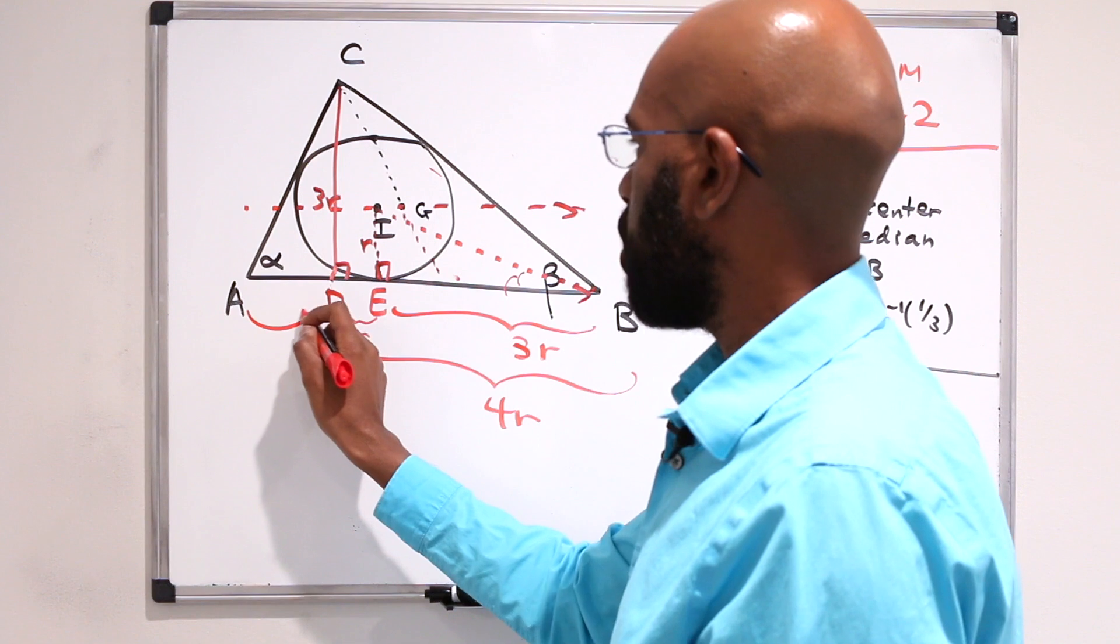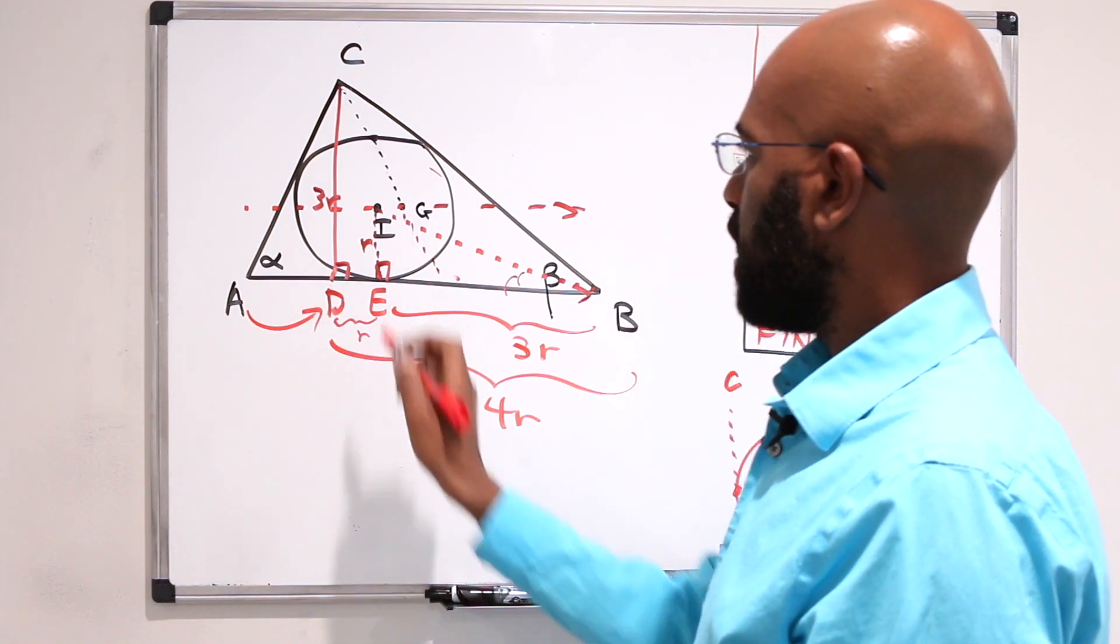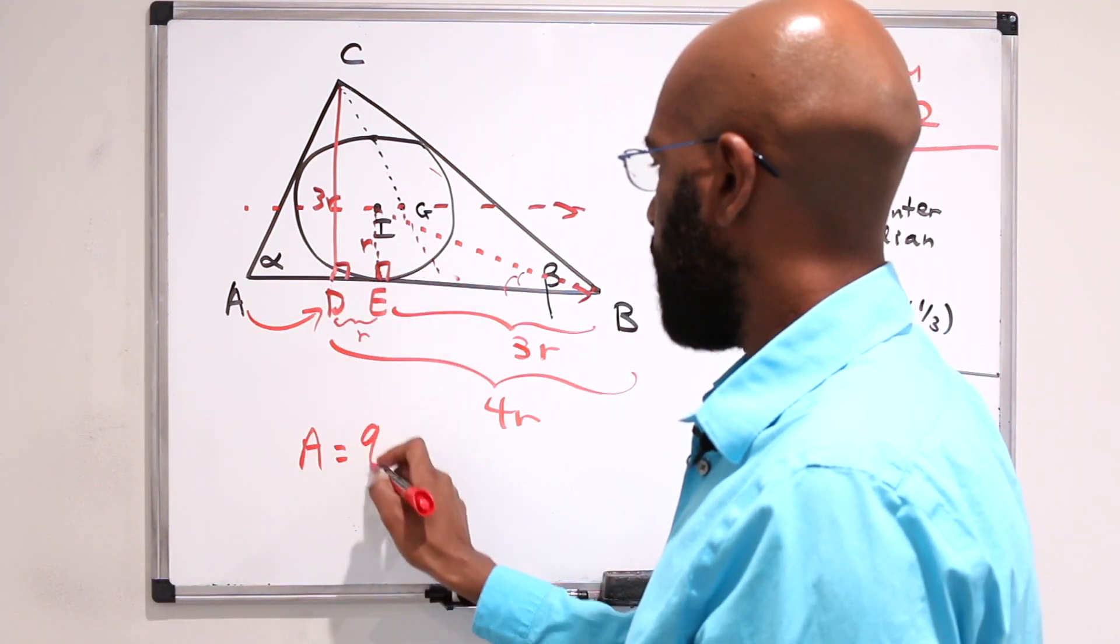So in fact, this line segment CD has to be a side length of the triangle. So A actually coincides with D, and as a consequence, A is actually a right angle.